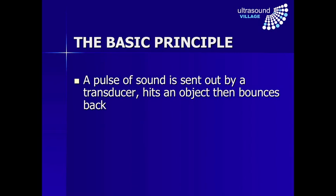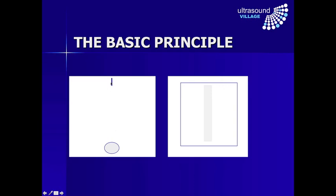To briefly recap the basic principles of ultrasound: what the machine does is send out a pulse of sound from the transducer. That pulse hits an object and bounces back. We see diagrammatically that this is the transducer, this is the object, and we see a wave front — the pulse of sound is sent out, it travels through the tissue losing a little bit of energy, and when it hits the surface of the object some of that energy is reflected back. The rest continues through and hits the back part of the object, while that reflection from the front is already traveling back towards the transducer.